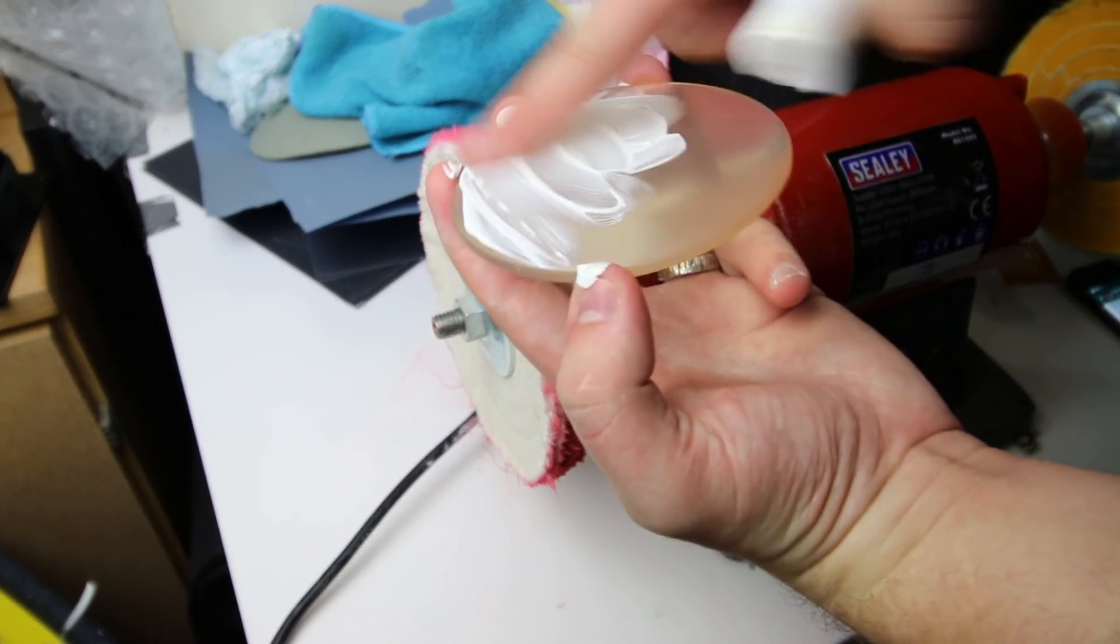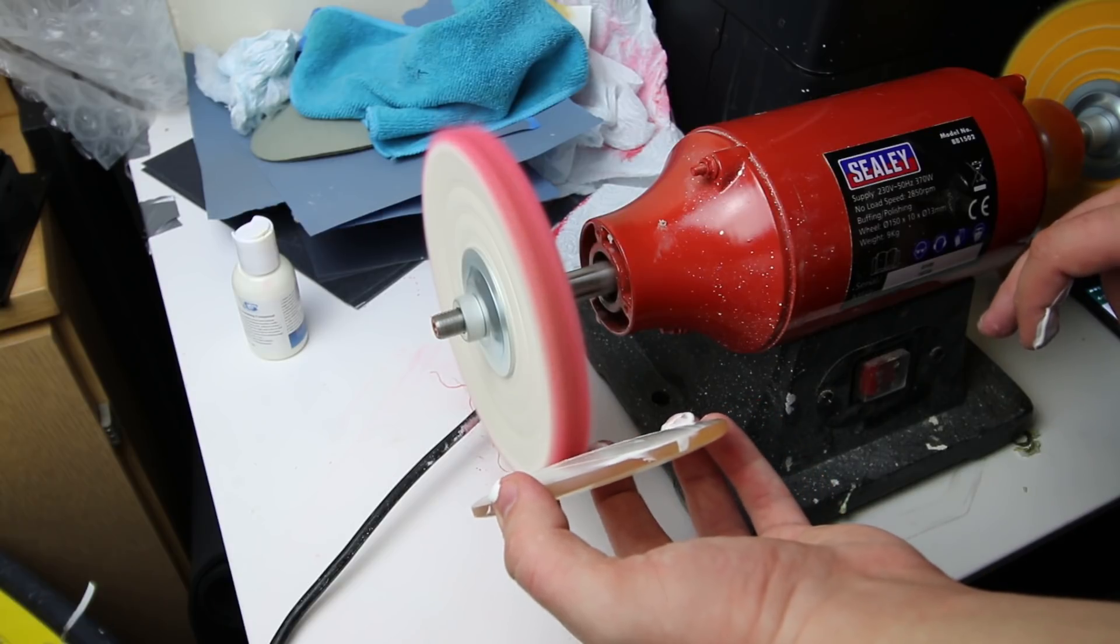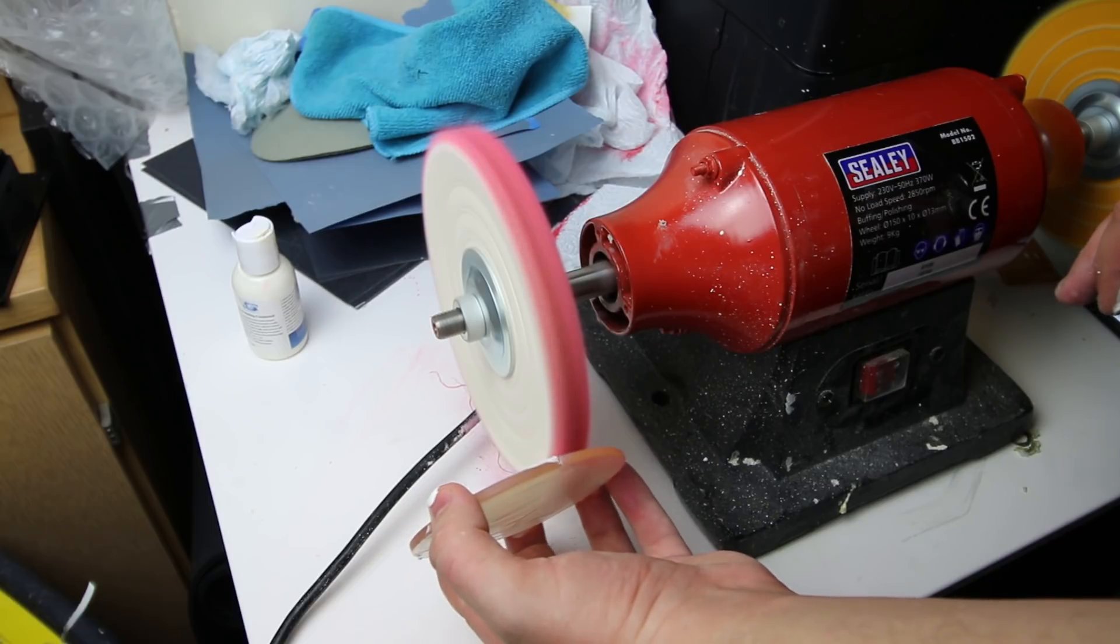Then I went on to a 1.2 micron polishing paste. Once again, the same wheel and absolutely buffed the hell out of it. I feel I could have went further. I feel that it needed an extra kind of bit of umph, an extra kind of greater polish.